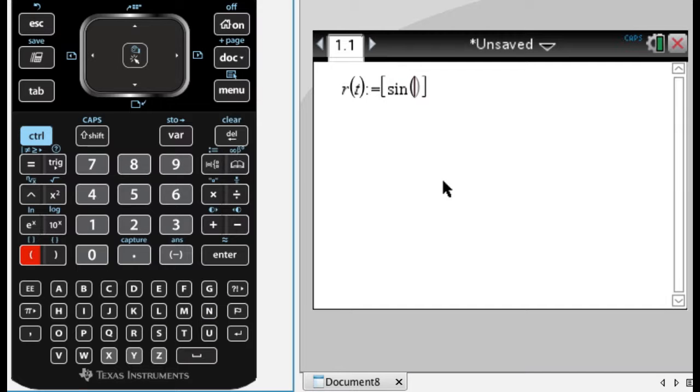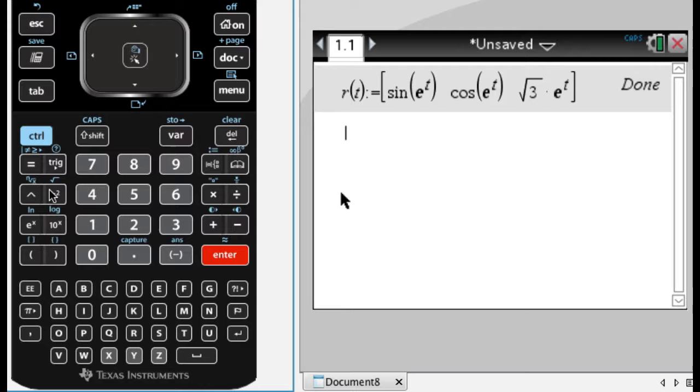So it's going to be sine of e to the t, so e to the t, comma, and then cosine of, I'm going to do this because it's a little faster if you're typing, and then it's the square root of 3, and then e to the t, so when I press enter it's going to turn those exp of t's into e to the t.